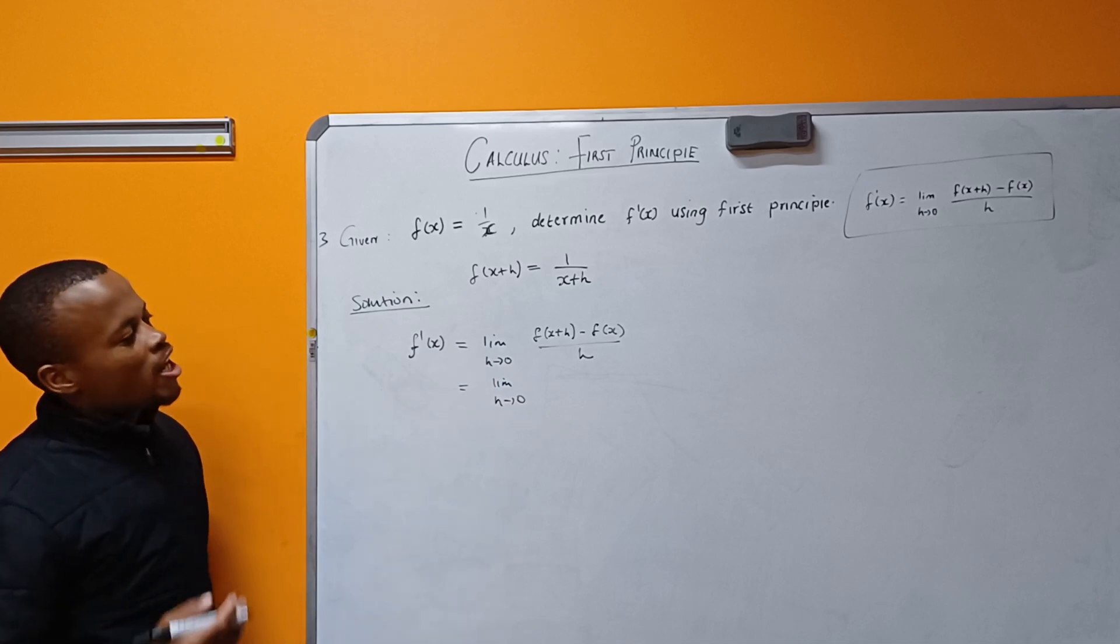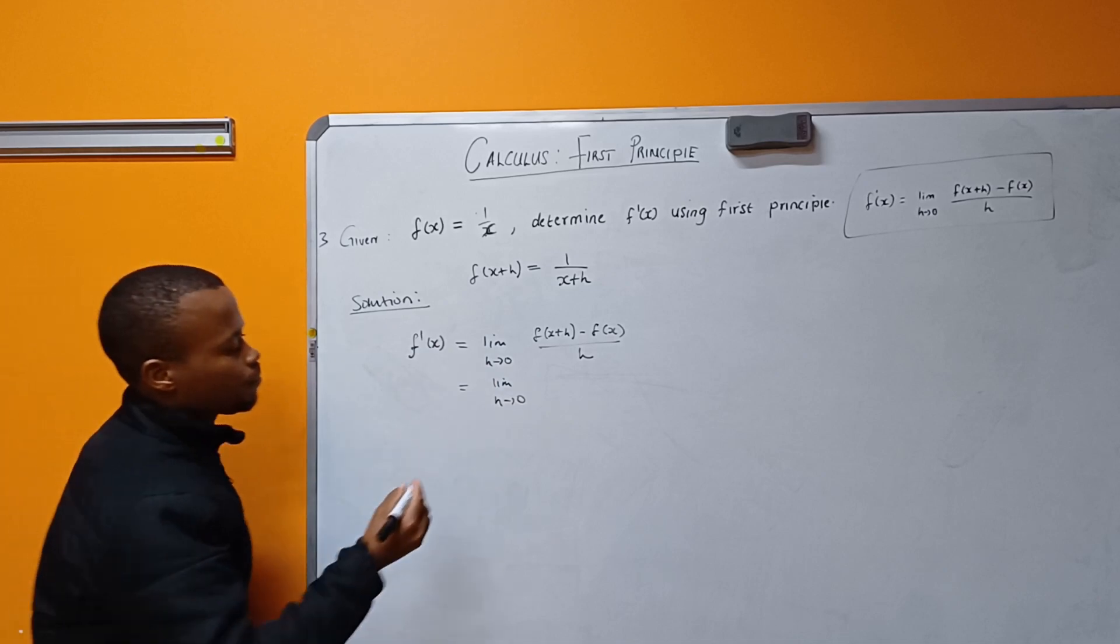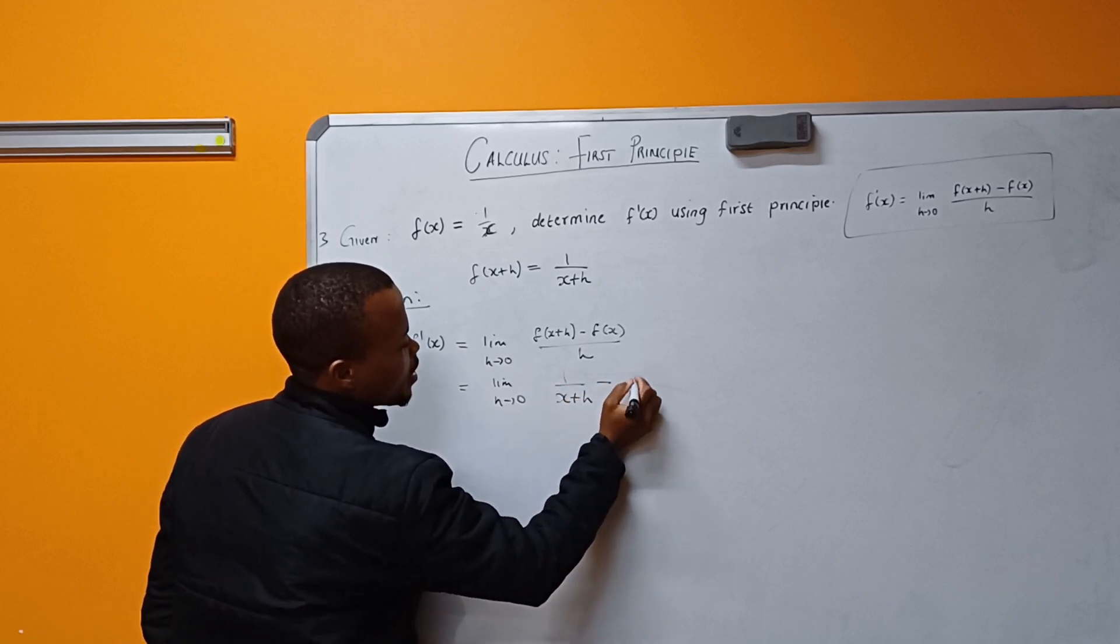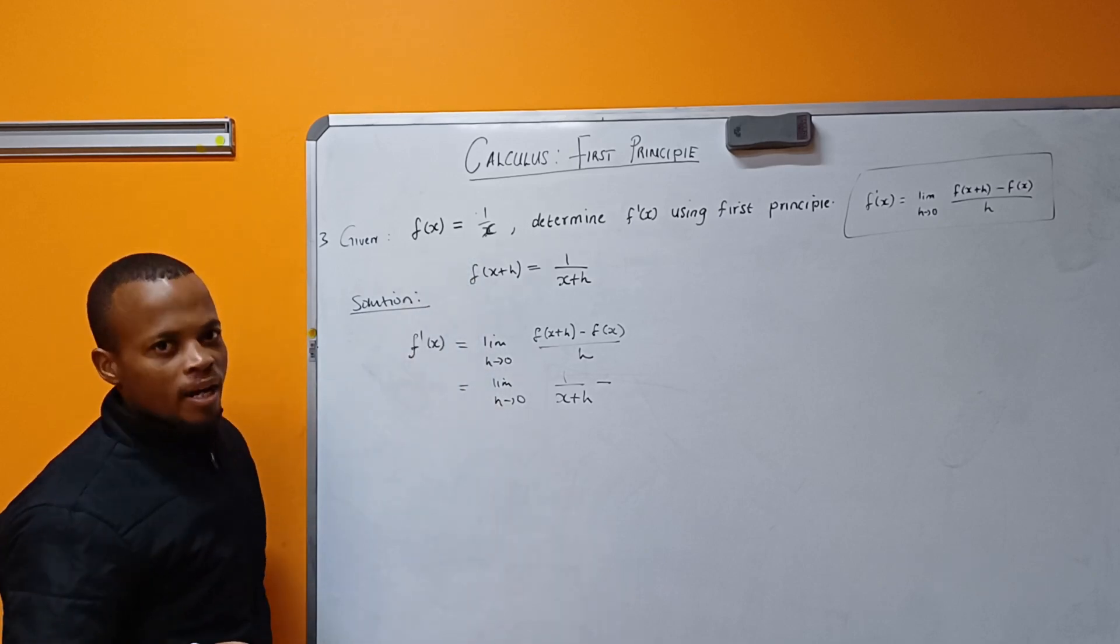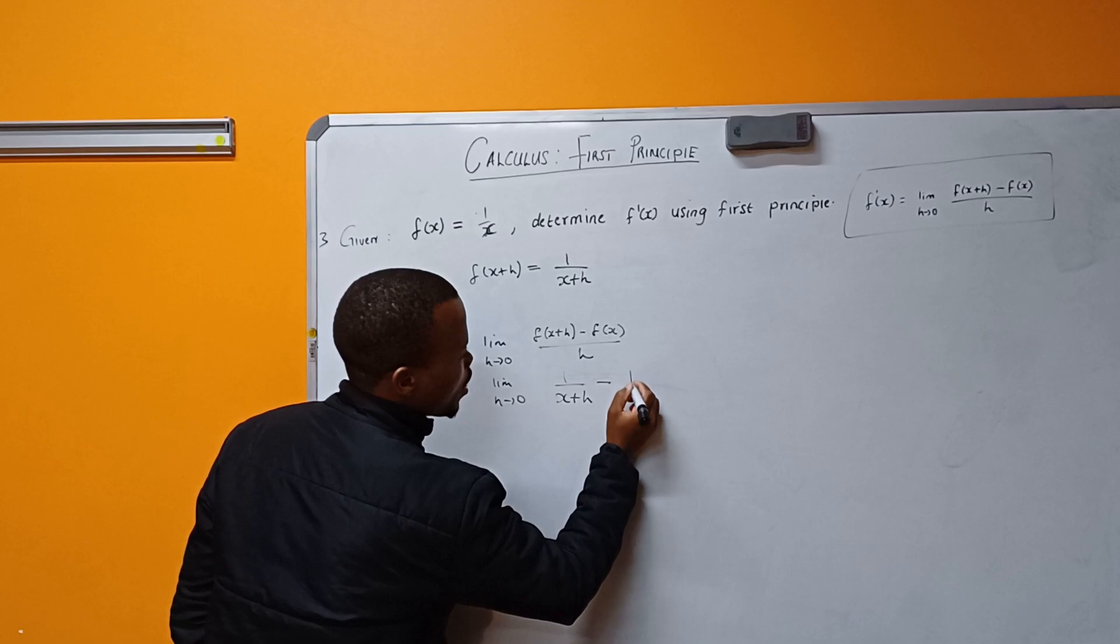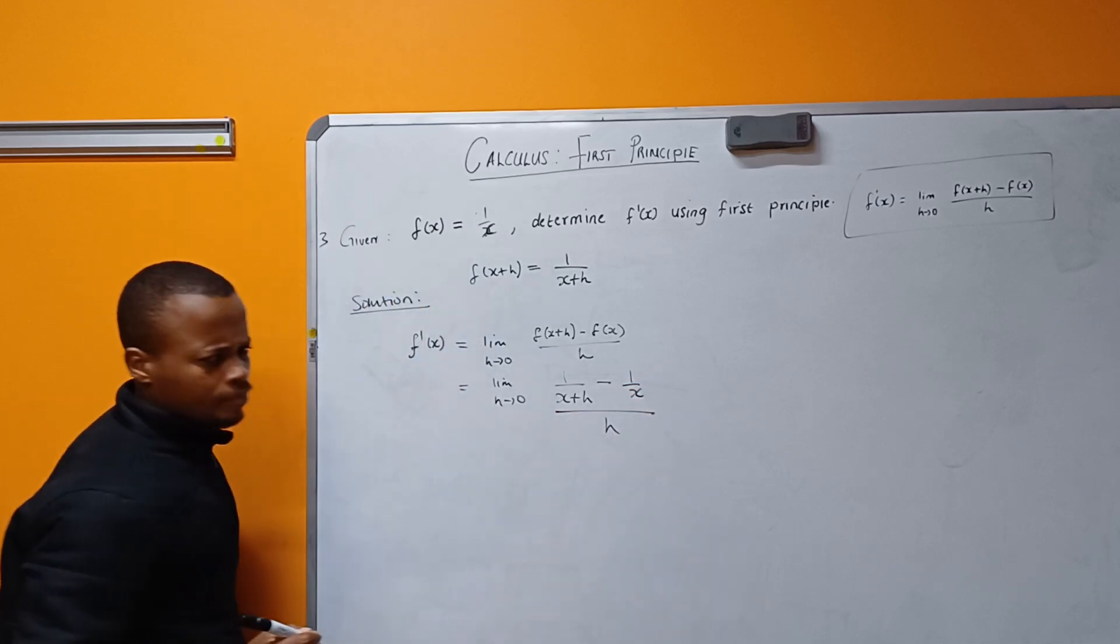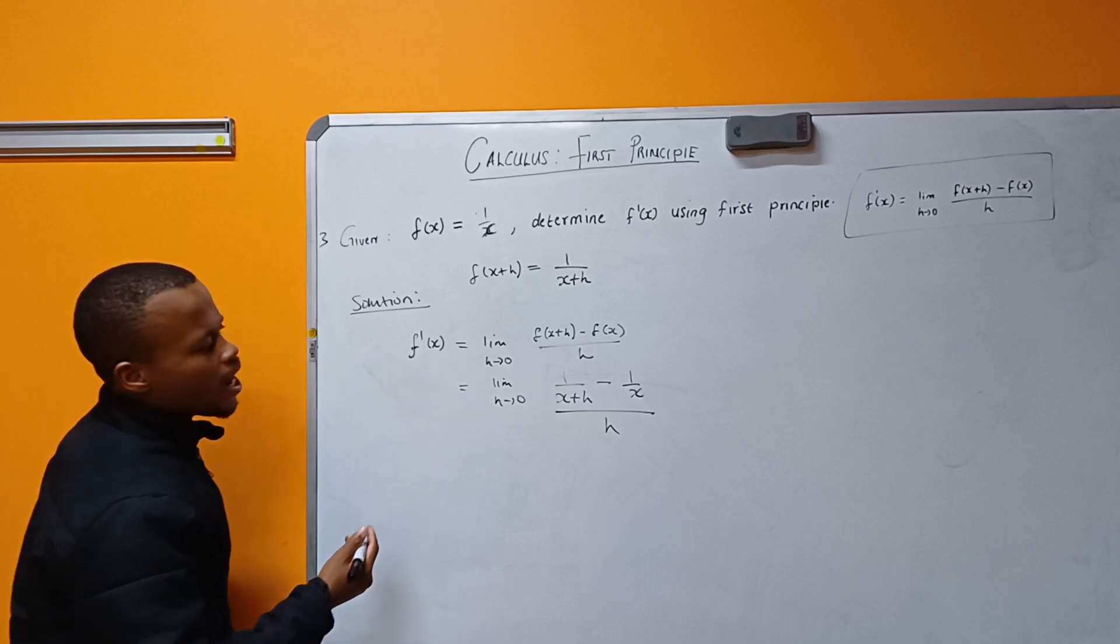Instead of writing f(x+h), I replace it with 1/(x+h). So it becomes 1/(x+h) - 1/x all over h.